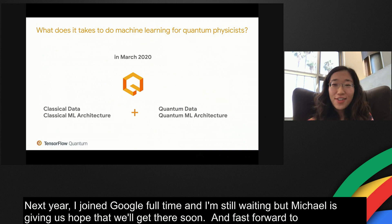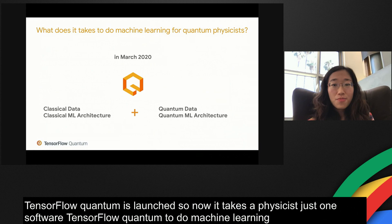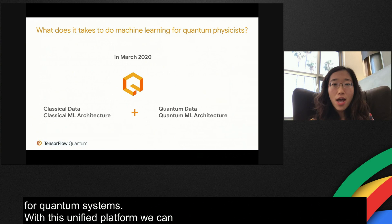Now it takes a physicist just one software, TensorFlow Quantum, to do machine learning research with and for quantum systems. With this unified platform, we can process both classical and quantum data, using both classical and quantum machine learning architectures.